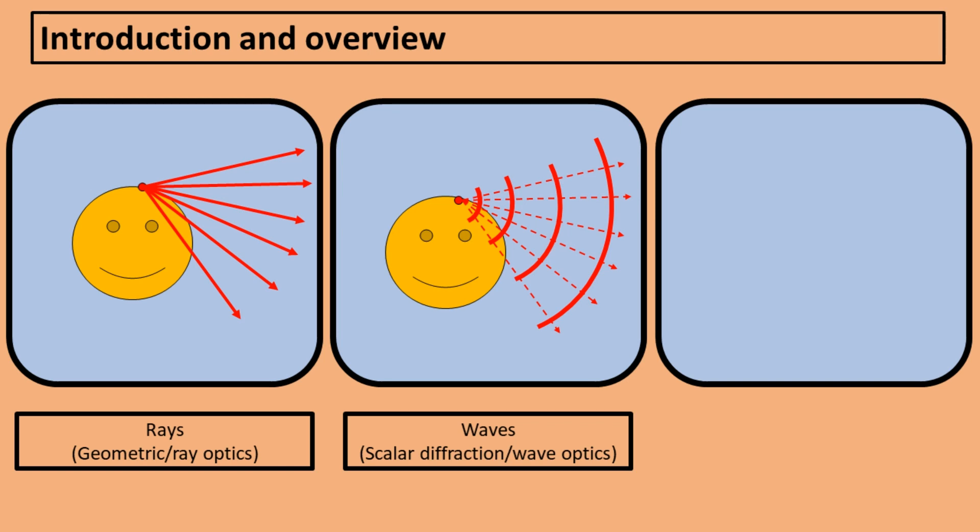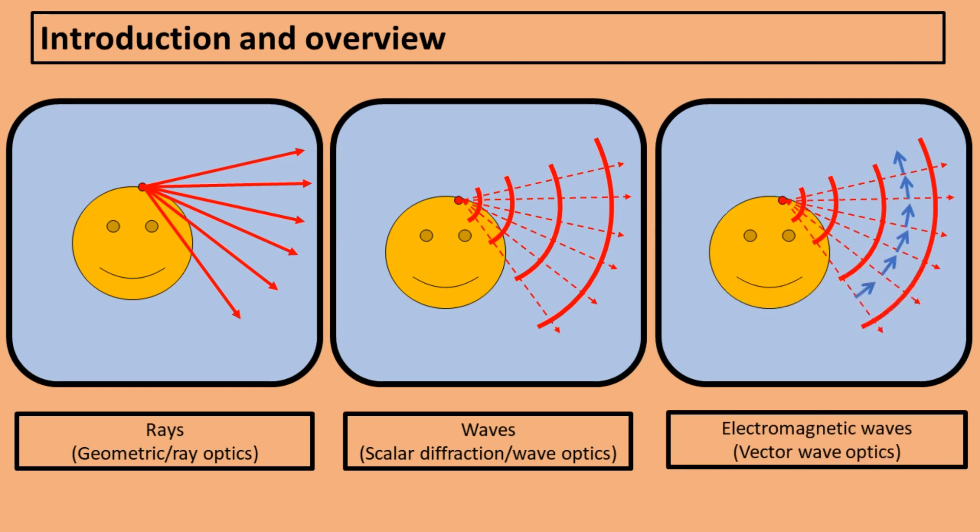In the most complete model of light, light is described as an electromagnetic wave, which has a vectorial nature. This means that in each point the electric field oscillates in a certain direction, which is described by the polarization of the light.